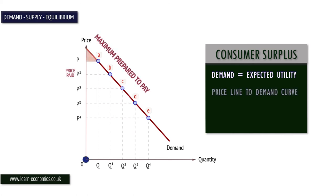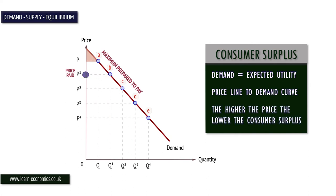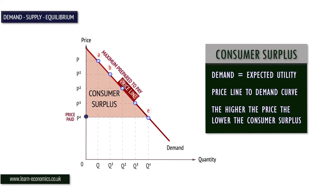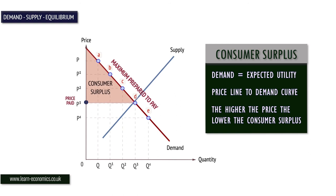In consuming quantity Q1 at price P1, the consumer is prepared to pay more than P1 for units between 0 and Q1. Consumer surplus is measured as the area from the price line up to the demand curve. If the price is P4, then the whole area is the value of the consumer surplus. The higher the price, the smaller the area for consumer surplus.